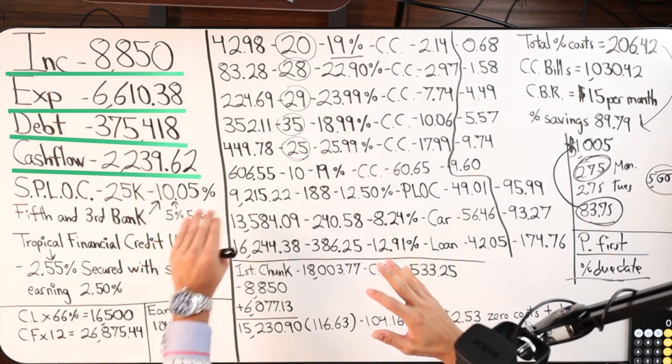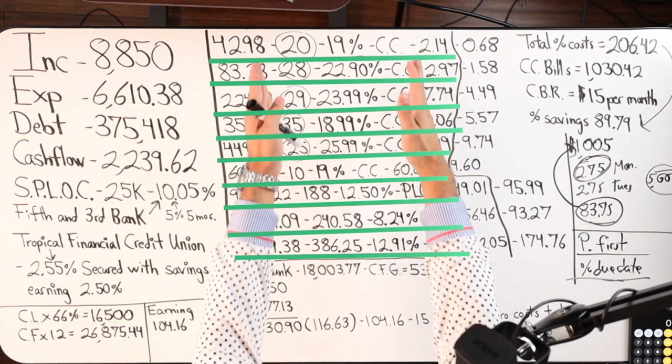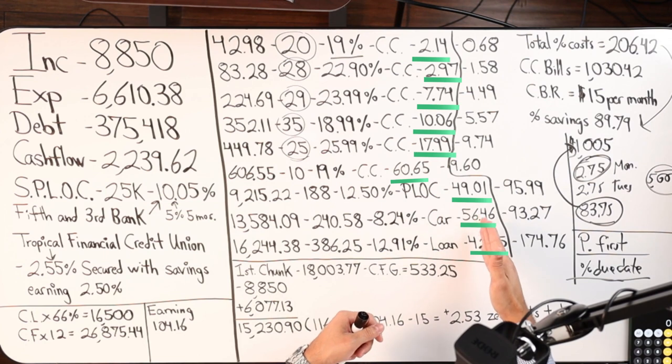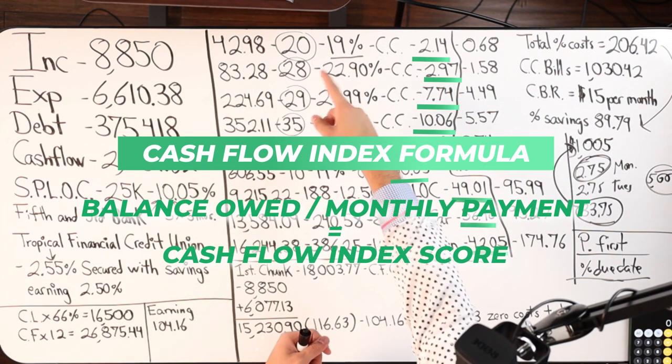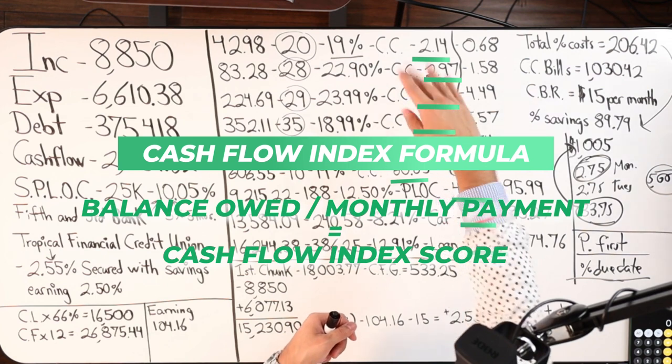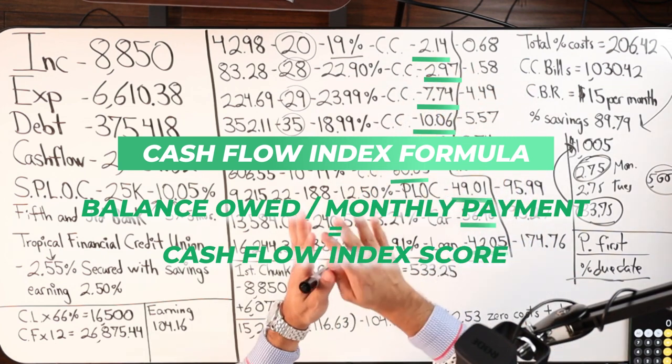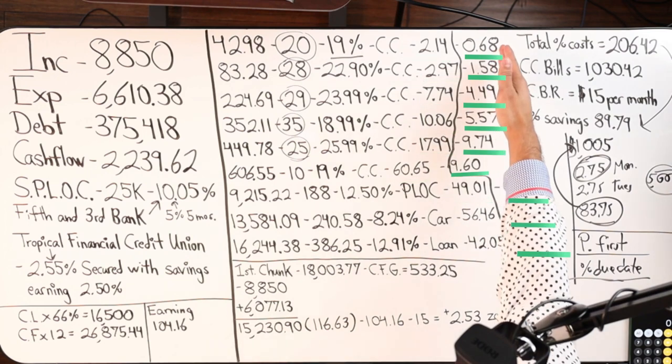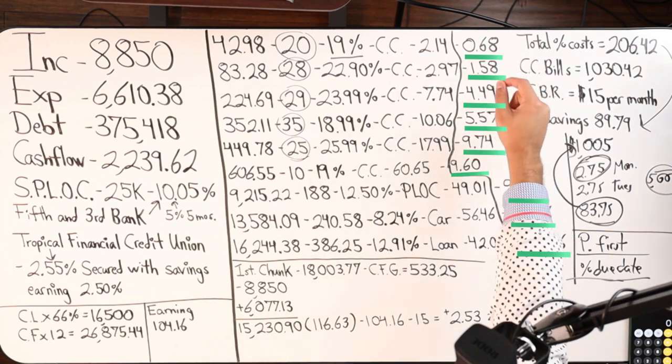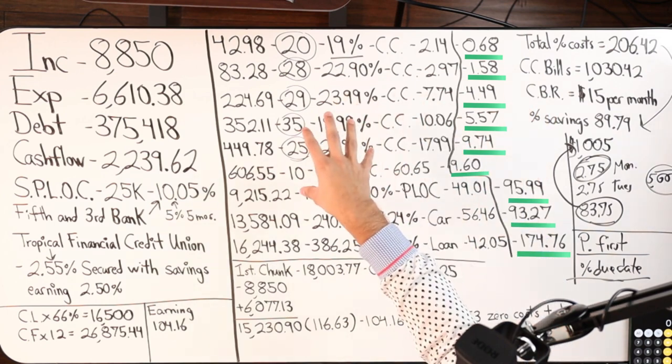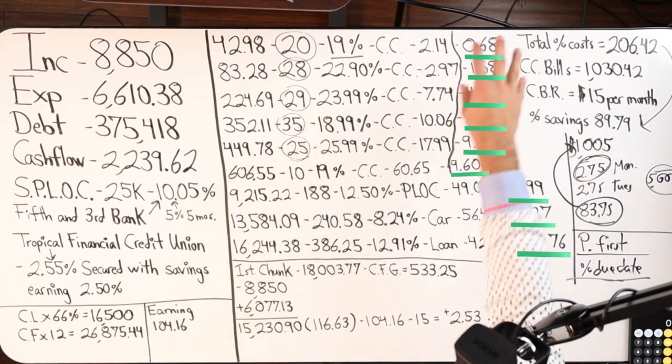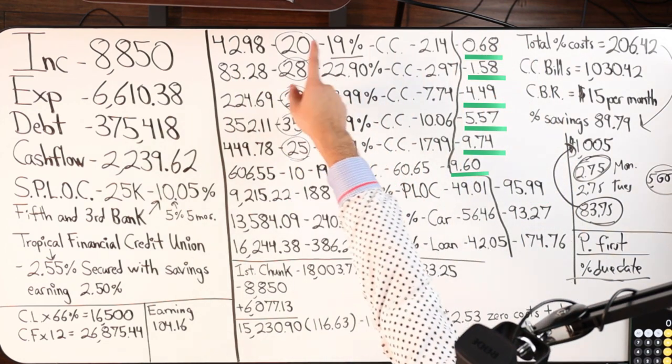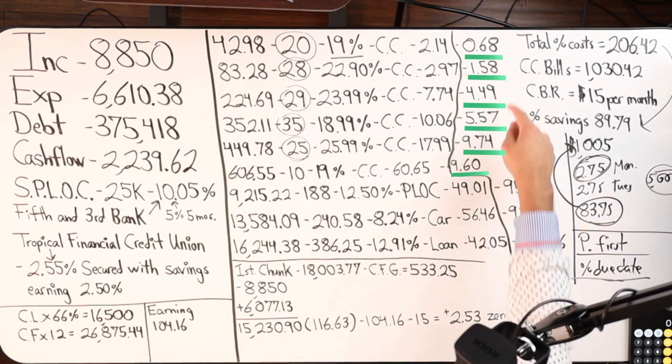So recap, four major numbers, debt tool, rules, all the debts that we're going to attack, cash flow index score. Get that number. Balance divided by monthly payment equals cash flow index score. If it's above 50, not attractive. If it's below 50, very attractive. You put it in order from least to greatest. Cash flow index formula, boom. Then you run the math on what is the interest cost right now on these debts. What is the interest costing me right now on all of these debts? With credit cards, take the interest rate, divide by 12, times it by the balance. These are the different numbers you're going to get.